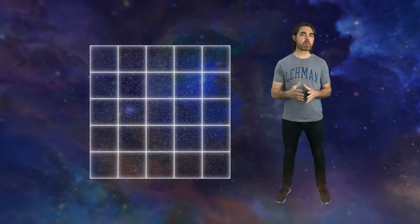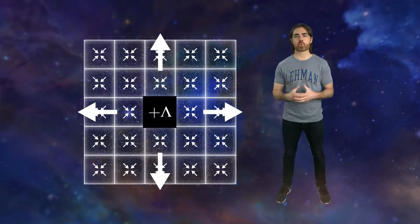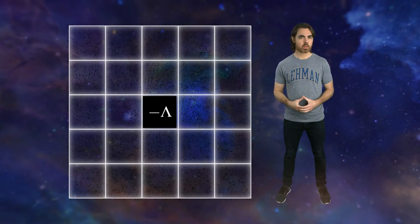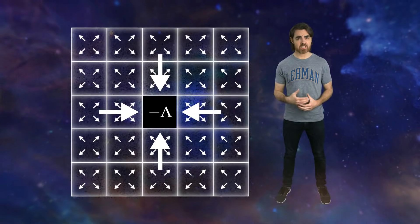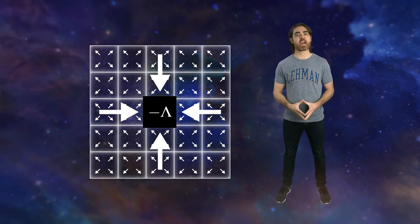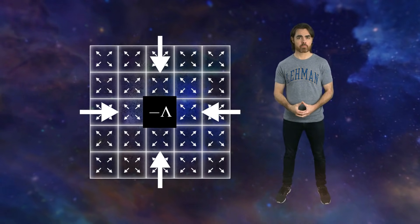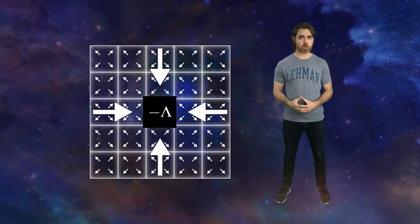So you remember I said that a constant positive energy density can be expressed as a positive cosmological constant, and that a positive lambda results in an anti-gravitational negative pressure. Well, a constant negative energy density, like the one proposed by Farnes, gives a negative cosmological constant. That gives a positive pressure, and in general relativity, positive pressure adds an attractive gravitational force no matter what causes it.